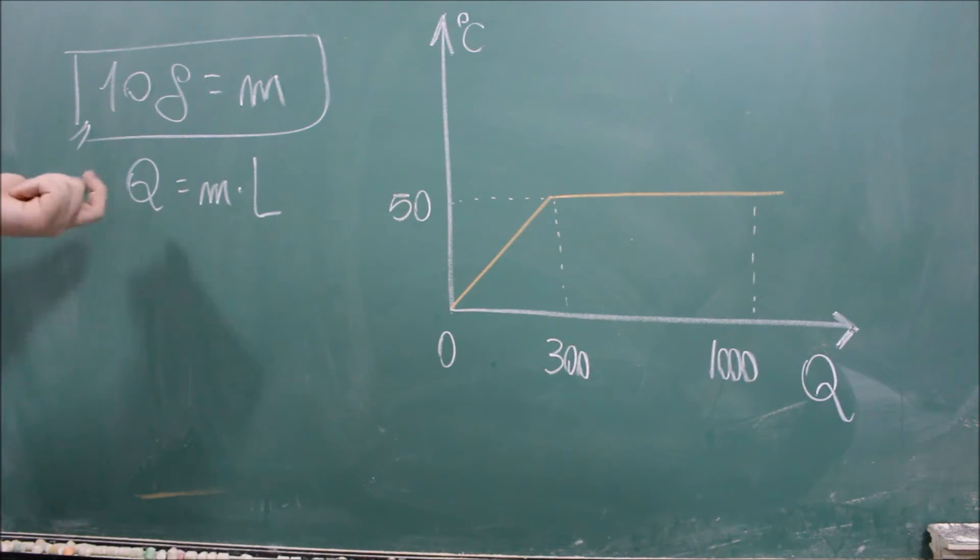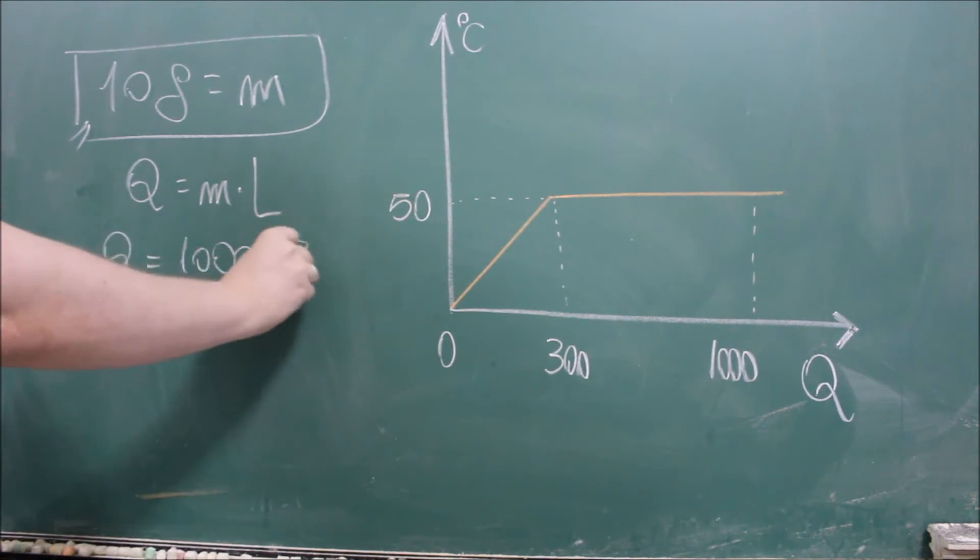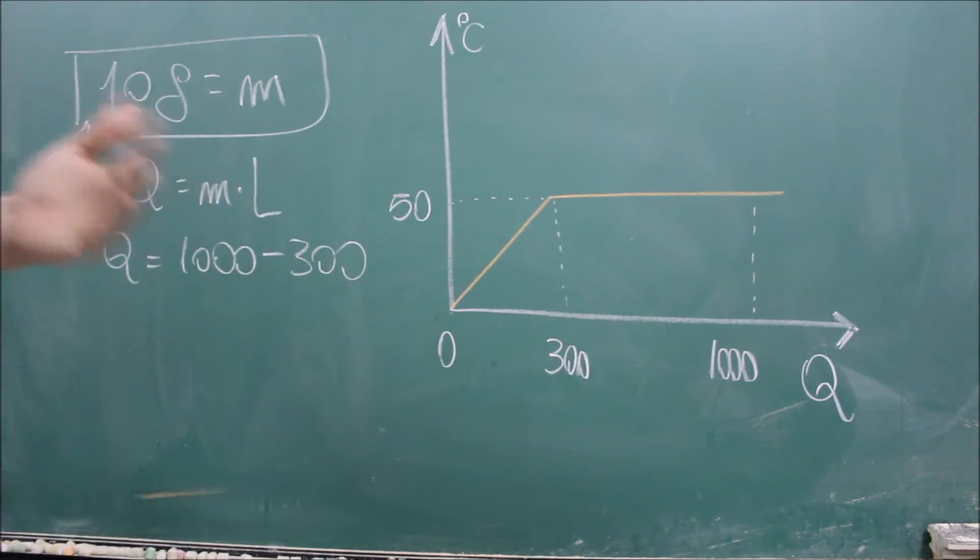Mas qual vai ser o Q? Bom, o meu Q vai de 300 a 1000. Então o meu Q, na verdade, o meu Q é 1000 em módulo. Estamos usando aqui módulos sem considerar perdas para lá, para quem perde, quem ganha, nada disso. É a mesma coisa que 700 calorias. São 700 calorias de energia para o Q=mL.